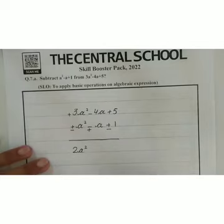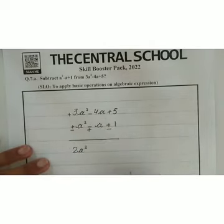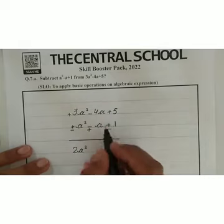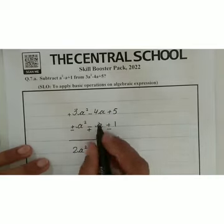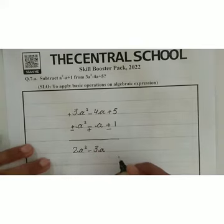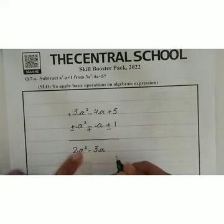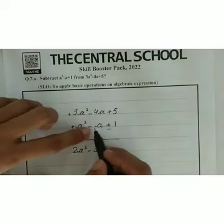Here, negative and positive — negative and positive makes negative — so we have to subtract 1 from 4, so 4 minus 1 is 3. And we write the sign of the greater value: 4 is greater than 1, so the sign here will be minus. We write 3a.